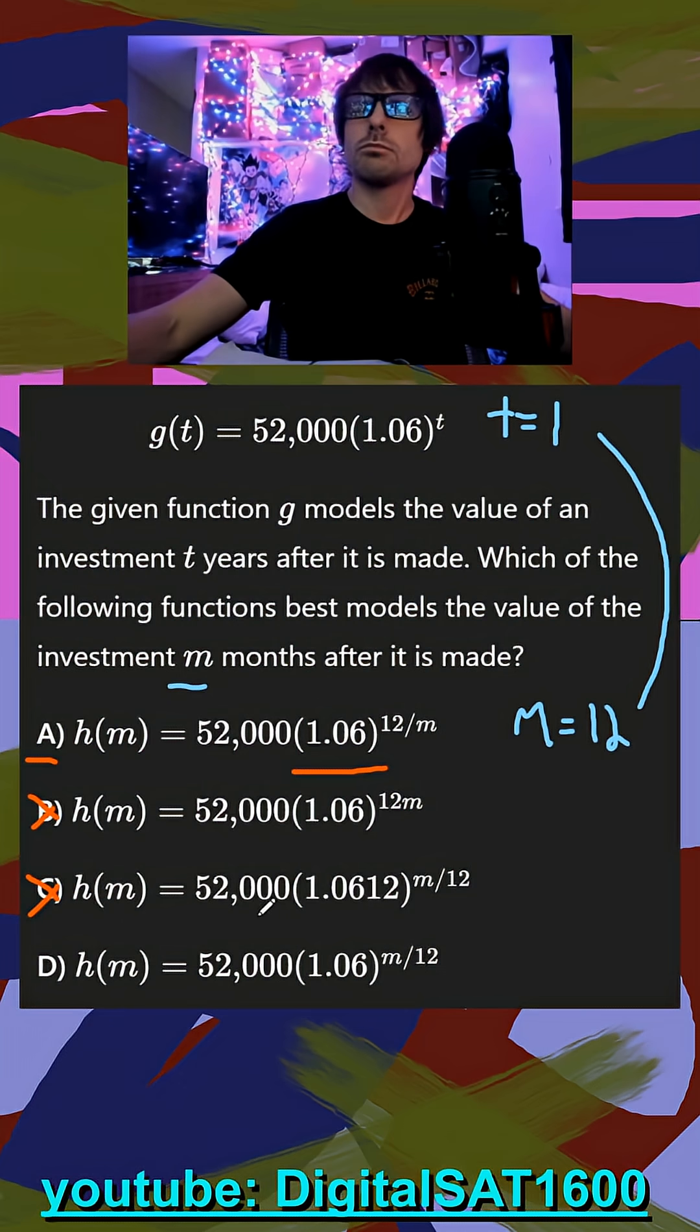And finally, in d, when I plug in 12, I get 1 for my exponent, also increasing by 6%.